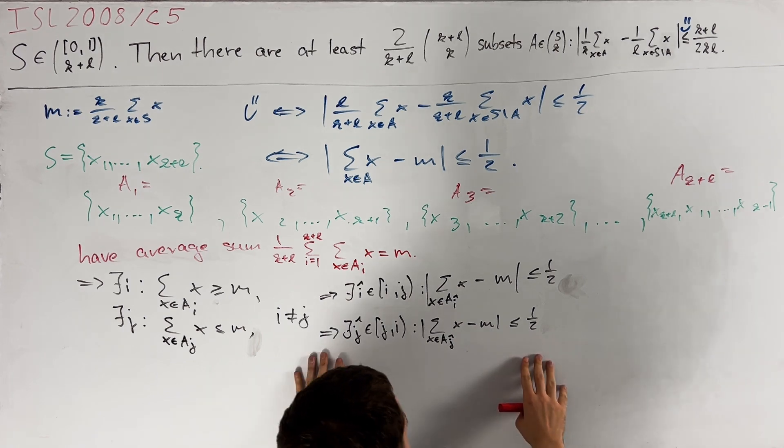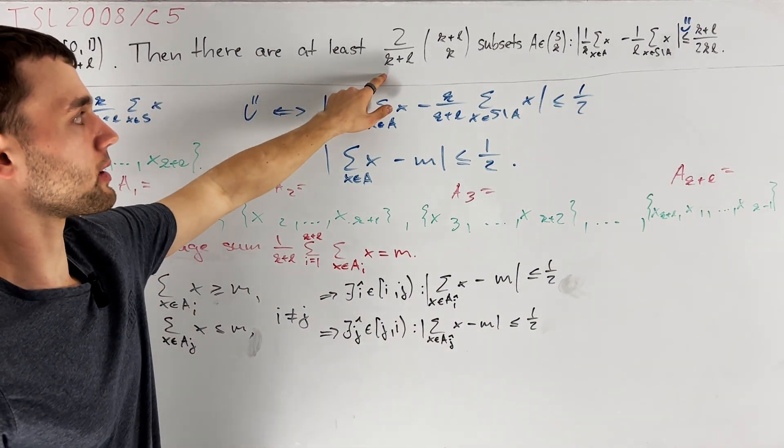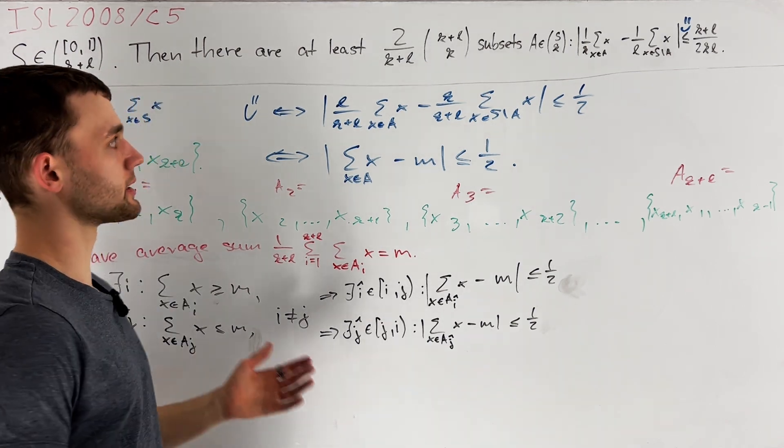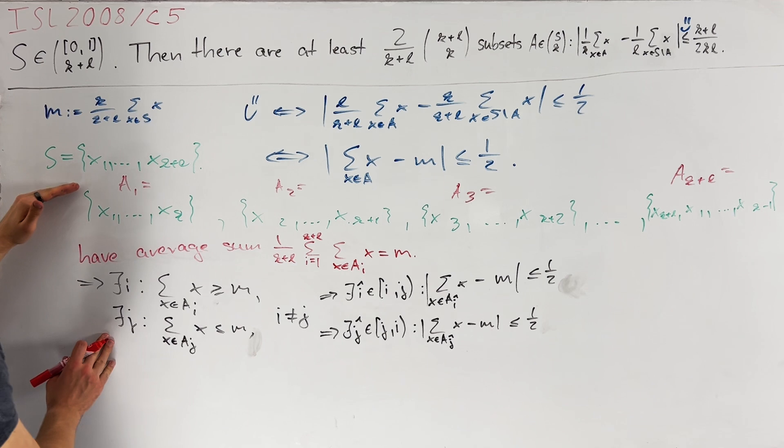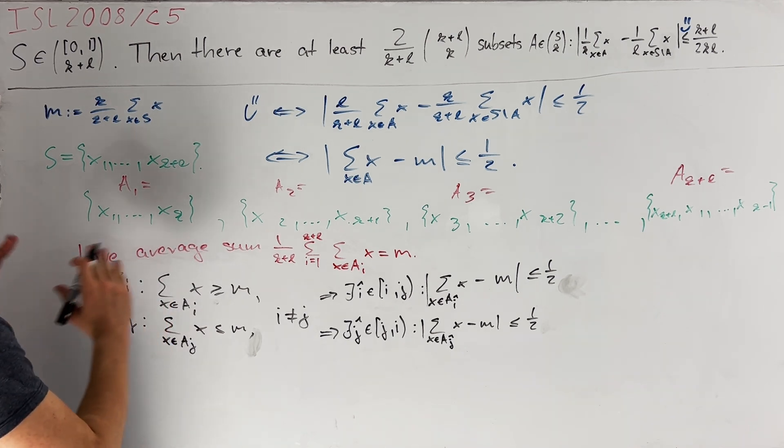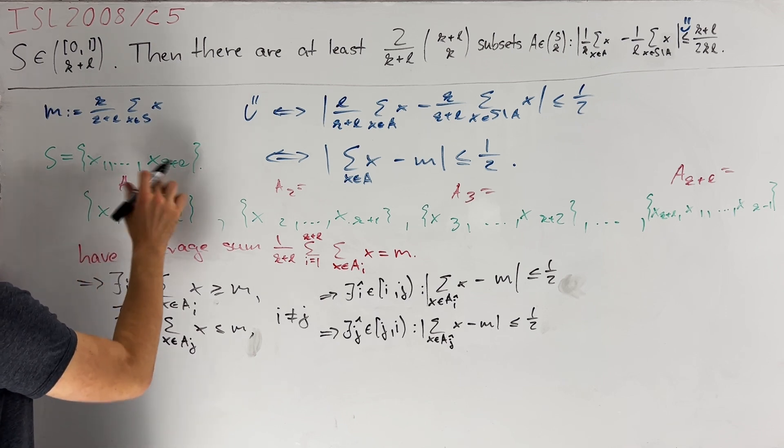So at least two distinct sets AI out of our K plus L sets in total satisfy Smiley. We will directly deduce from this observation that a fraction of at least 2 over K plus L of the total subsets satisfy Smiley. Do you see what's the missing step? All of what we have done here would have worked for any labeling of the elements of S. Therefore, we can just reorder the Xi and everything will stay true.